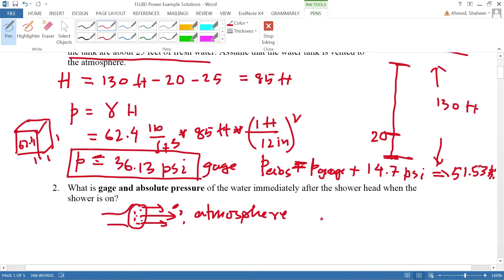If it's in the atmosphere at sea level, the gauge pressure would be zero PSI, and the absolute pressure would be just the atmospheric pressure, 14.7 PSI. That's what this problem is asking.